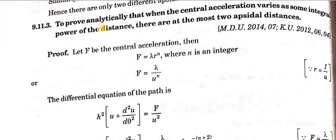Next we prove analytically that when the central acceleration varies as some integral power of the distance, there are at most two apsidal distances. We have to prove that if the central acceleration varies as an integral power of r — which can be negative or positive — then at most two apsidal distances are possible. We write the central acceleration as F = λ · r^n.